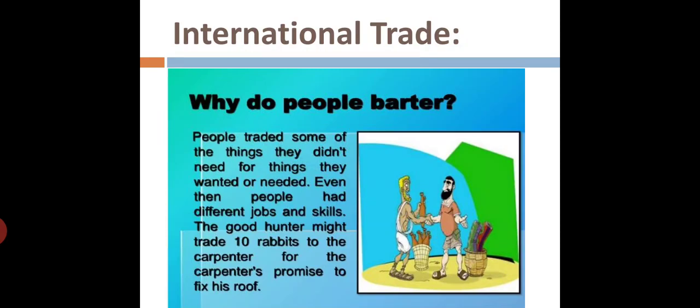So why do people barter? People traded some of the things they didn't need for things they wanted or needed. Even then, people had different jobs and skills. The good hunter might trade 10 rabbits to the carpenter for the carpenter's promise to fix his roof. It's just an example.